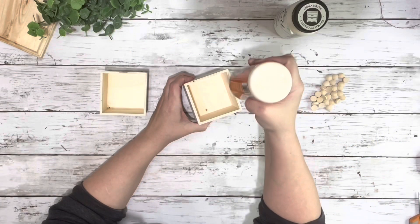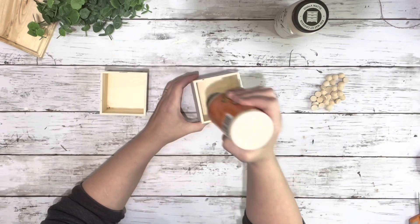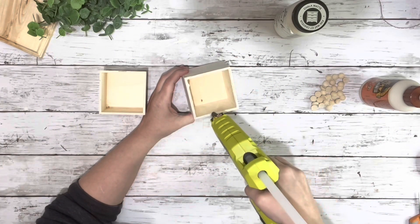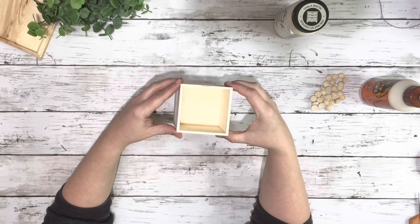I started by taking the two boxes and gluing one on top of the other. I just put some wood glue around the edge as well as some hot glue and placed one right on top.